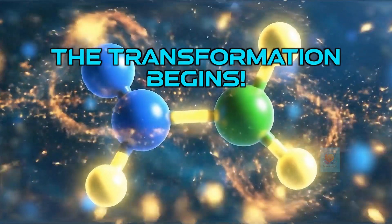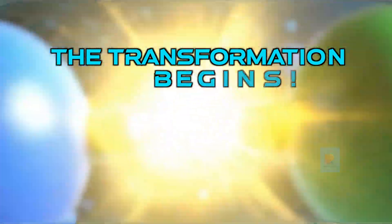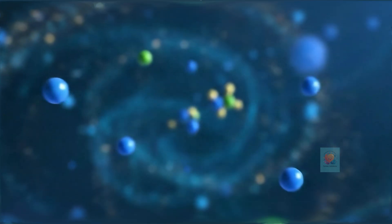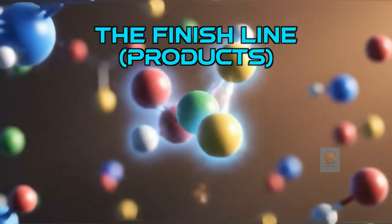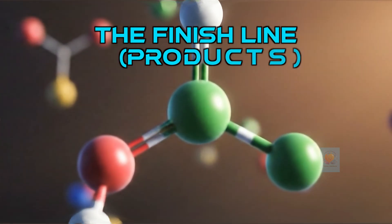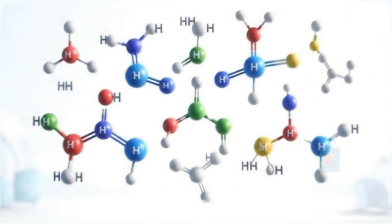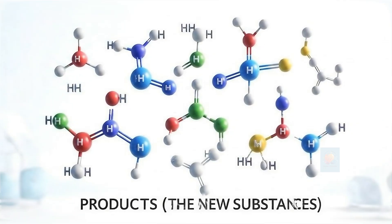A chemical reaction begins when enough energy is added to break the chemical bonds of the reactants. All the atoms are now free. The atoms then rearrange to form brand new teams with new chemical bonds. These new substances created at the end are called the products.